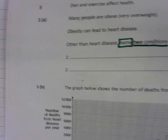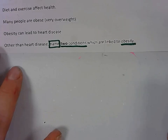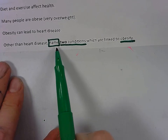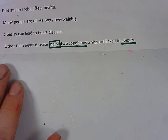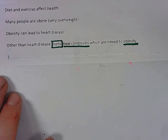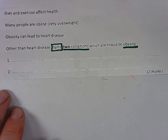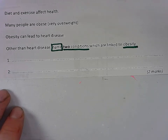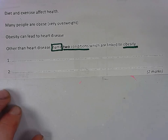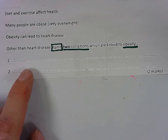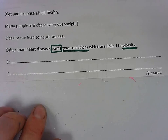The next question is about obesity. Other than heart disease, name two conditions which are linked to obesity. You could say type 2 diabetes for number one and a stroke for number two. Other correct answers would be depression, arthritis, high blood pressure, or breathing difficulties. But the most obvious two would be type 2 diabetes and stroke.